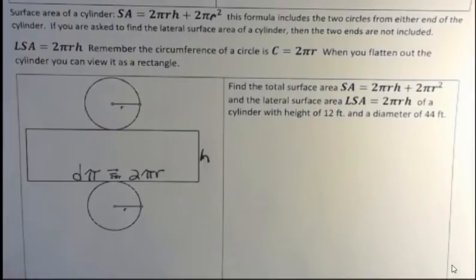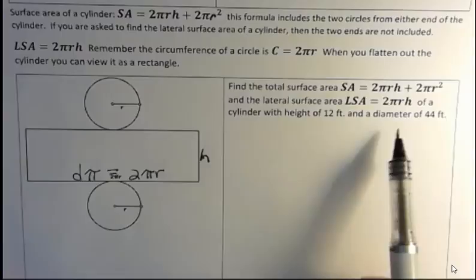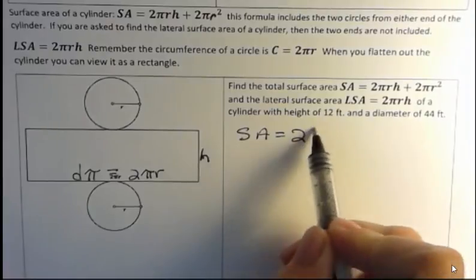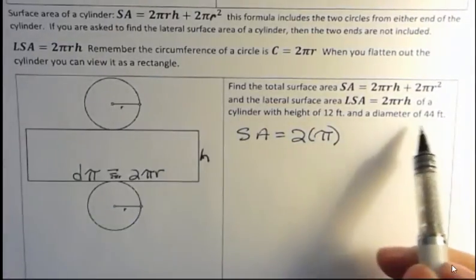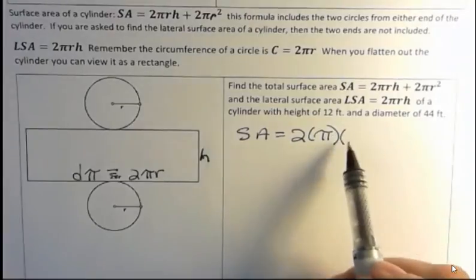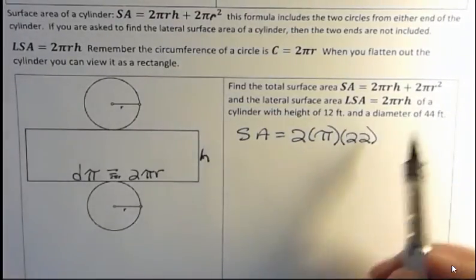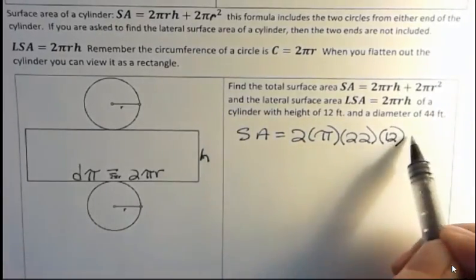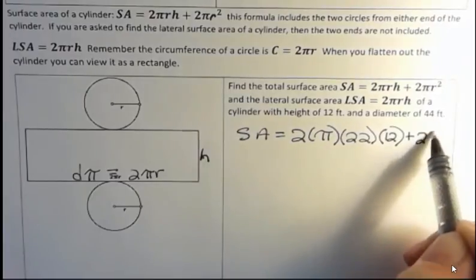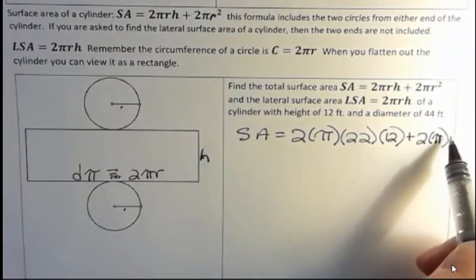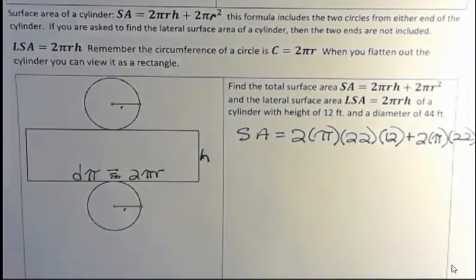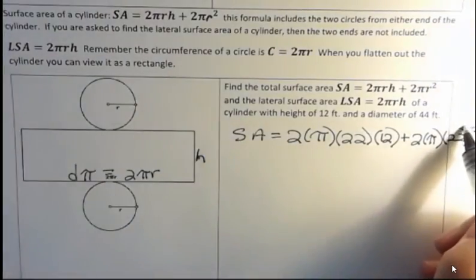So in this one, we're asked to find the surface area and the lateral surface area of a cylinder with the height of 12 ft and a diameter of 44 ft. So for the surface area, we have 2 times pi times radius. Well, the diameter is 44, and half of 44 is 22. And then h is 12. And then we have 2 pi times the radius, which is 22 squared. Just ran off the page there. So that part is squared.